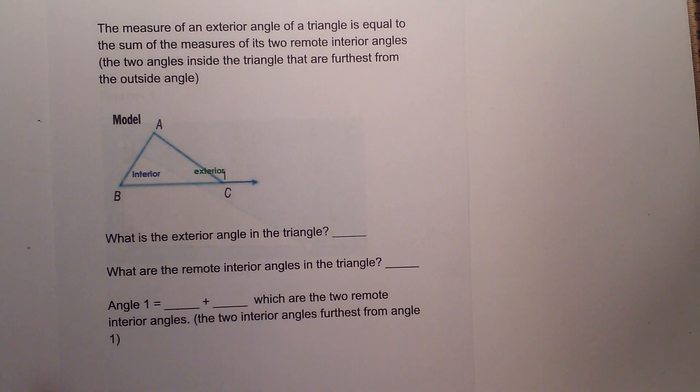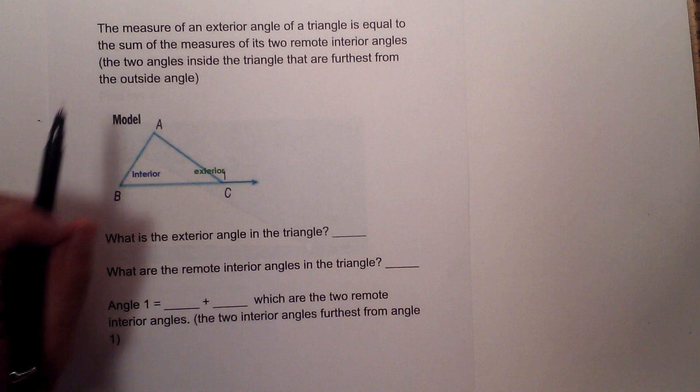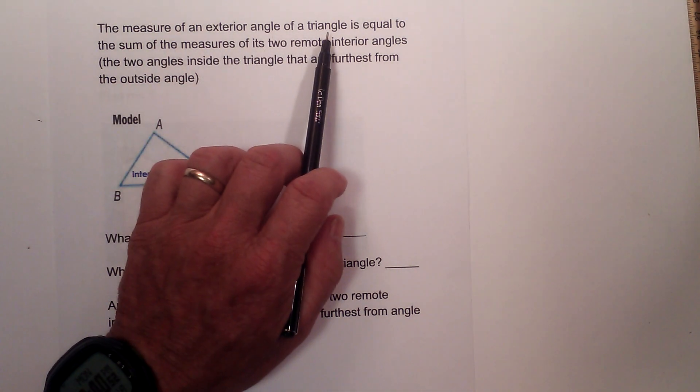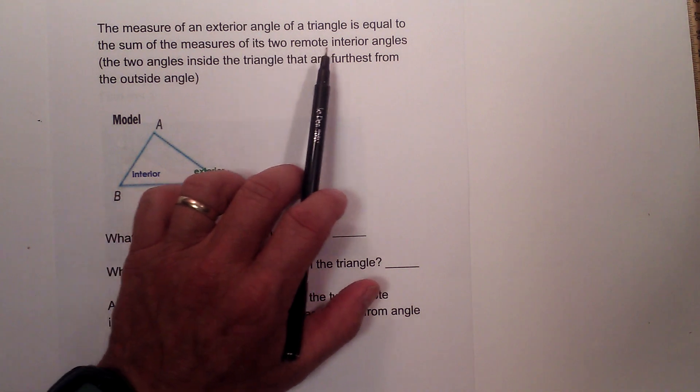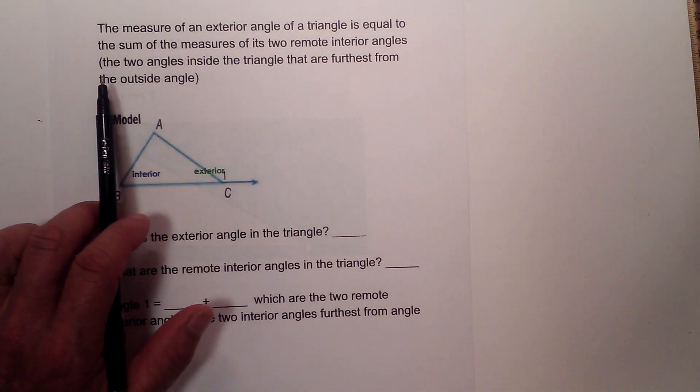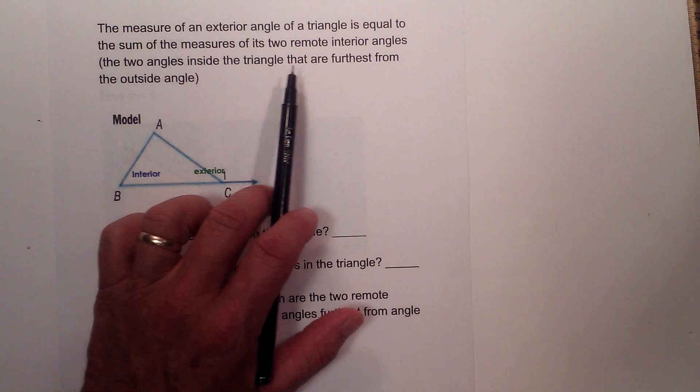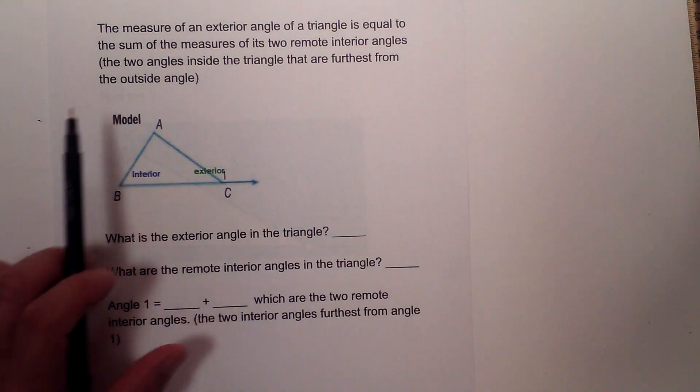The measure of an exterior angle of a triangle is equal to the sum of the measures of its two remote interior angles. The remote interior angles are the two angles inside the triangle that are furthest from the outside angle.